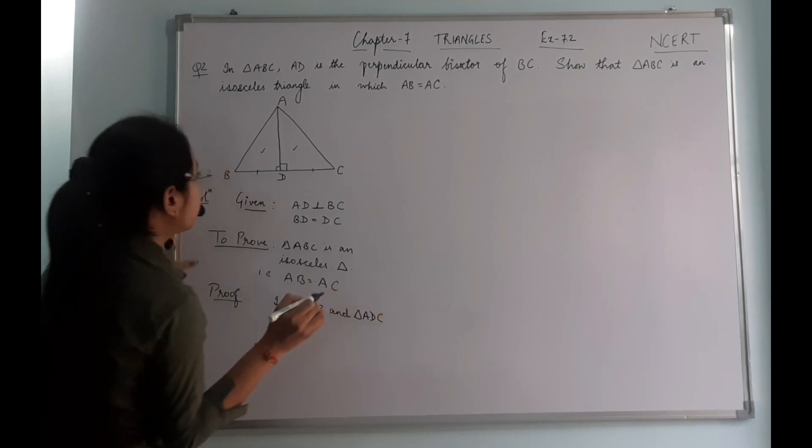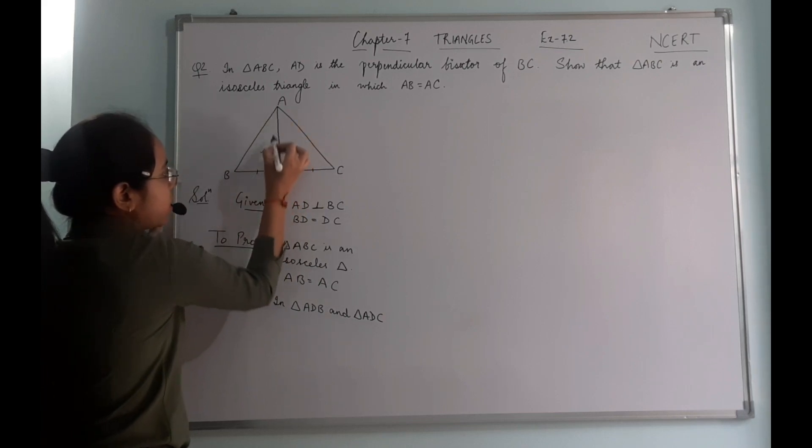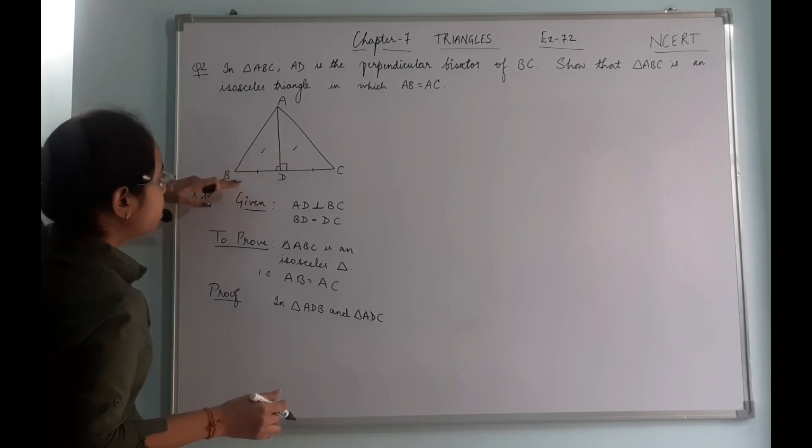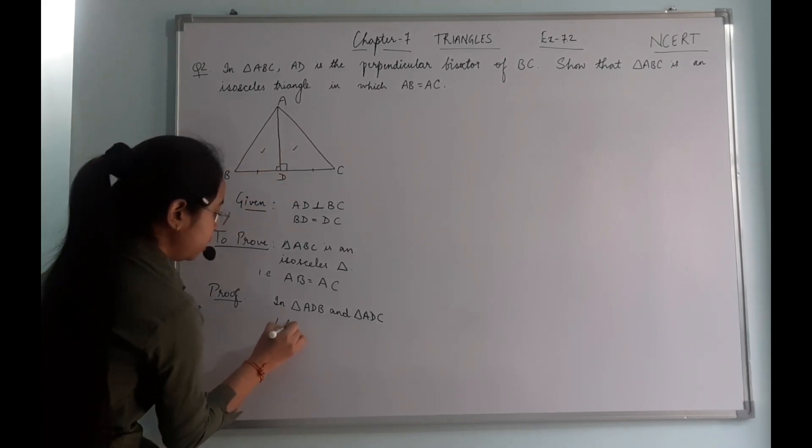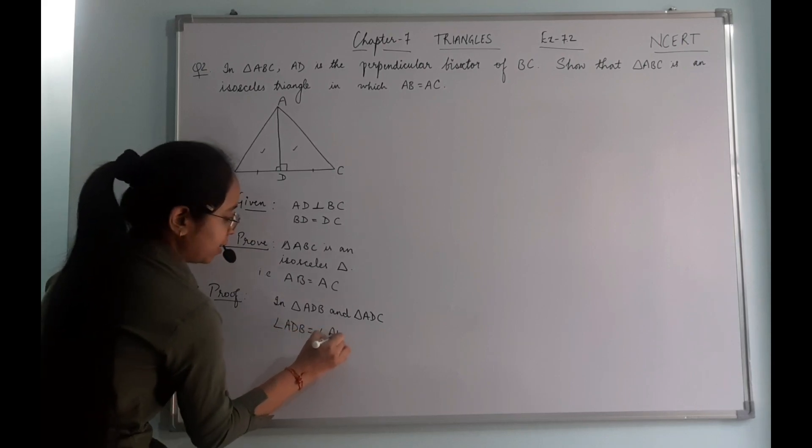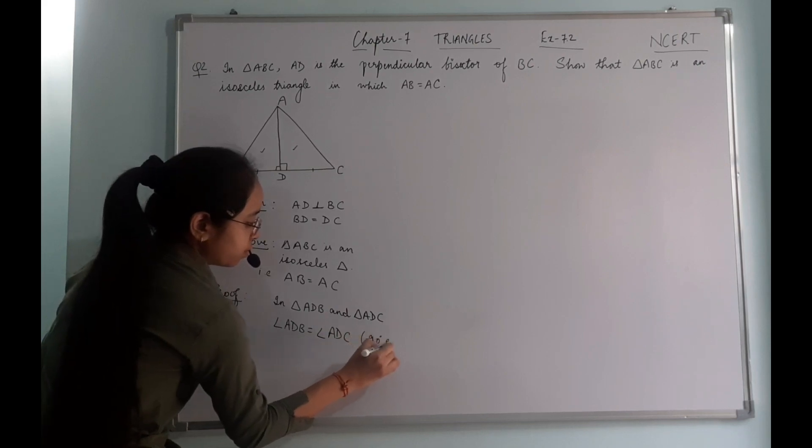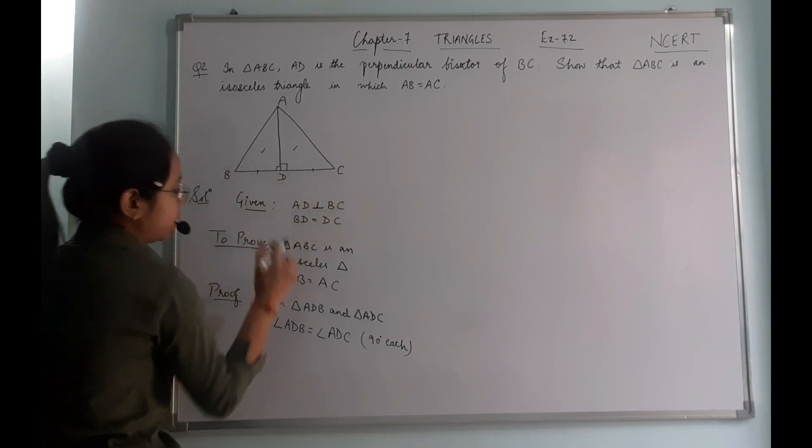In triangle ADB and triangle ADC, we are given angle ADB equals angle ADC, 90 degrees each. BD equals DC.